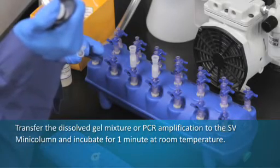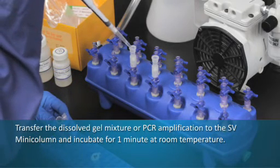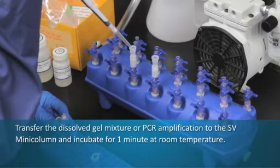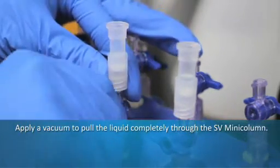Transfer the dissolved gel mixture or PCR amplification to the SV mini column and incubate for one minute at room temperature. Apply a vacuum to pull the liquid completely through the SV mini column.